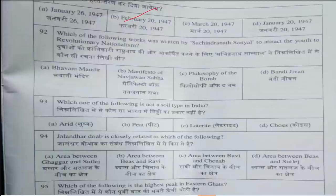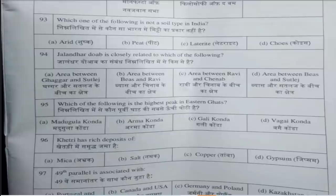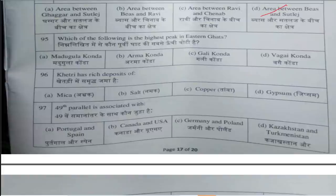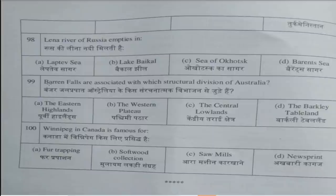Question number 92: Which of the following works was written by Sachindranath Sanyal to attract youth to revolutionary nationalism? Answer is D, Bandi Jivan. Next question: Which one of the following is not a soil type in India? Answer is option D, Coins. Question number 94: Which of the following is the highest peak in the Eastern Ghats? Answer is option B, Arma Konda. Question number 96: Khetri has rich deposits of — answer is option C, Copper.